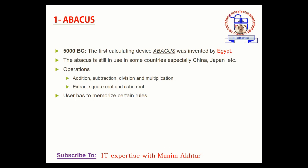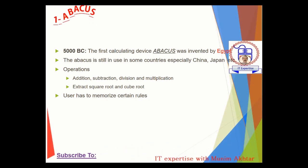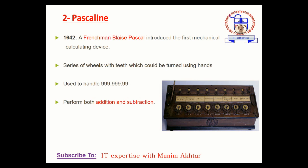The Abacus is normally from around 5000 BC — the first calculating device invented by Egyptian scientists. The abacus is still used especially in China and Japan. The abacus was used to perform operations like addition, subtraction, division and multiplication. It was also used to extract square roots and cube roots with the help of predefined rules of the abacus system.